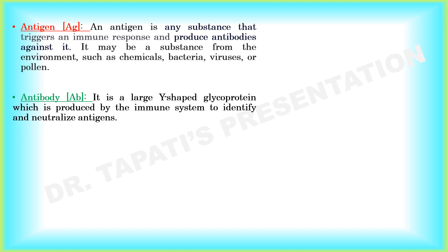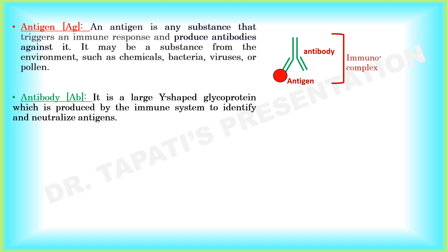Let's quickly review antigen, antibody, and immunoassay. An antigen is any substance that triggers an immune response that produces antibodies against it. It may be a substance from the environment like chemicals, bacteria, virus, or pollen. The antigen-antibody complex is actually known as an immunocomplex.